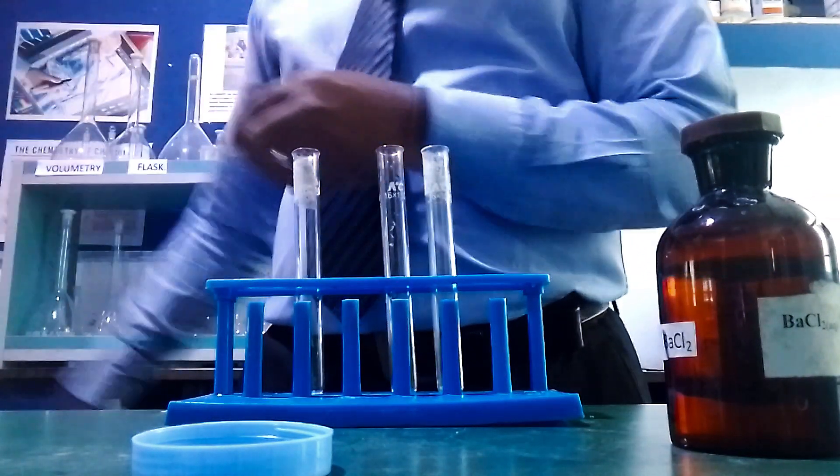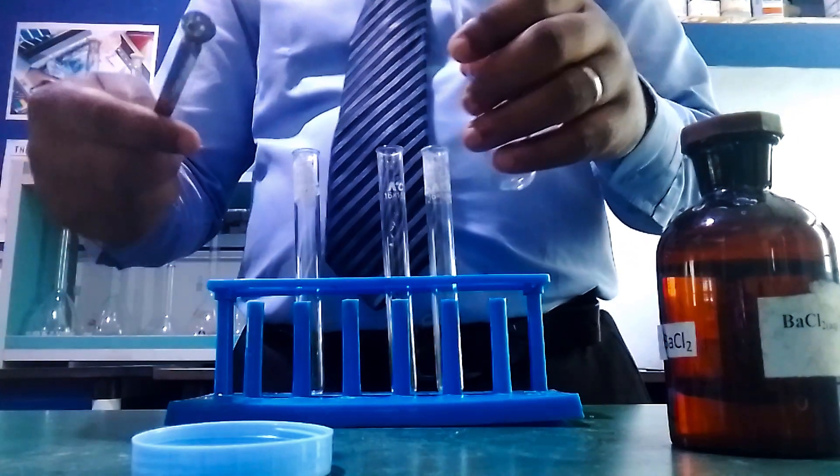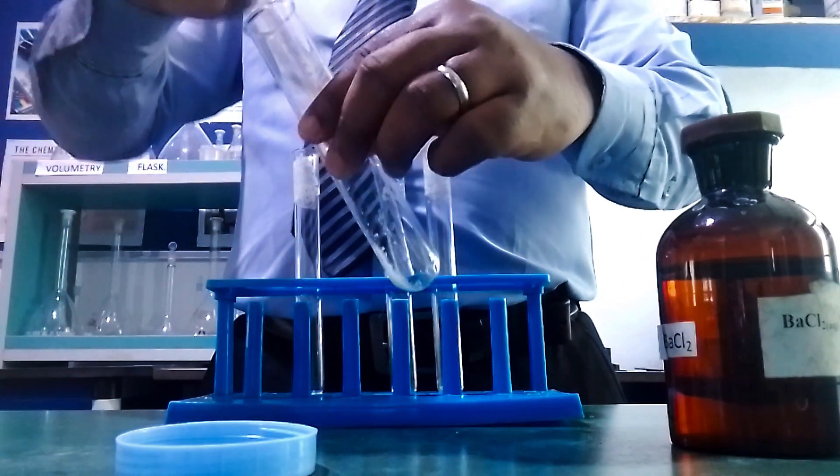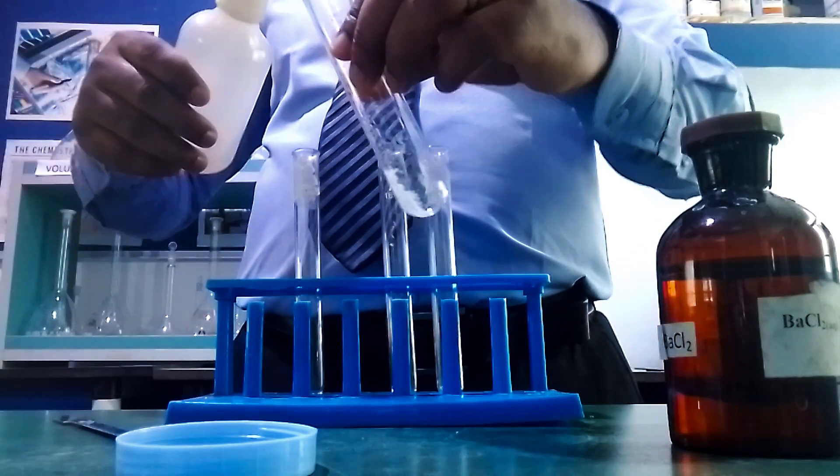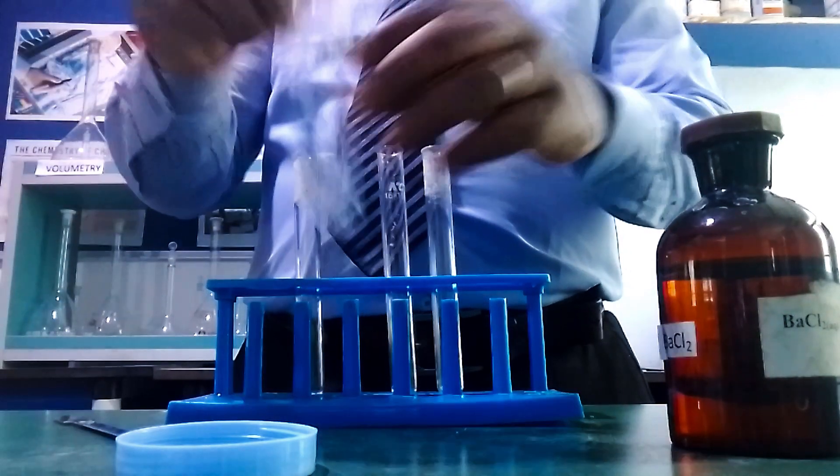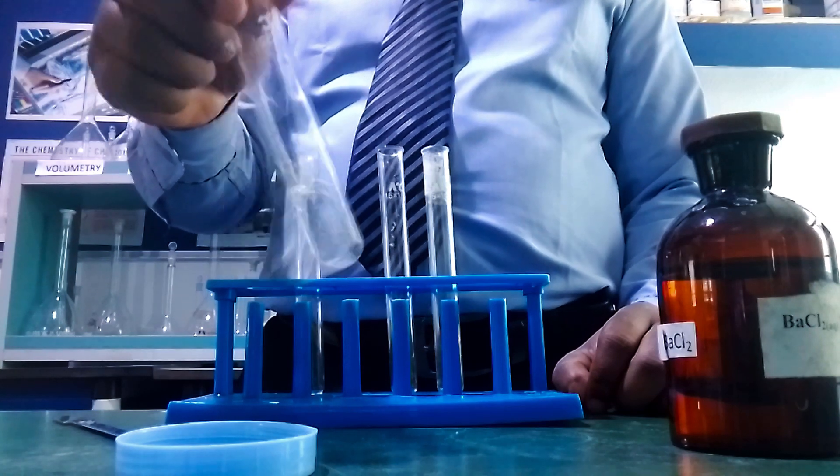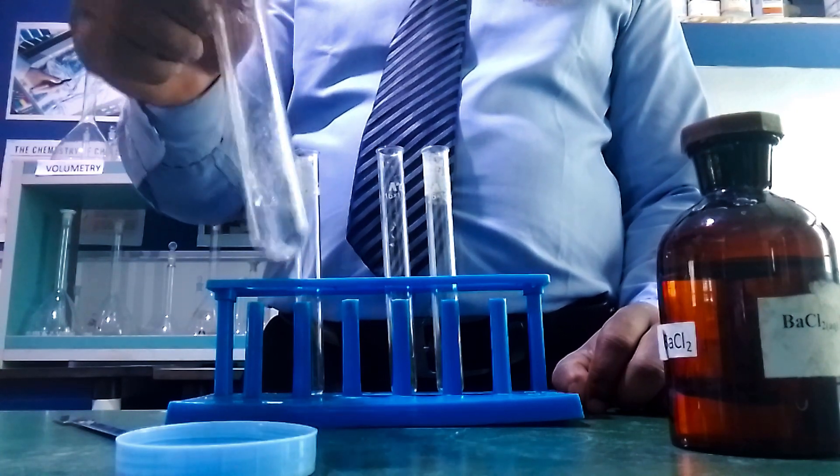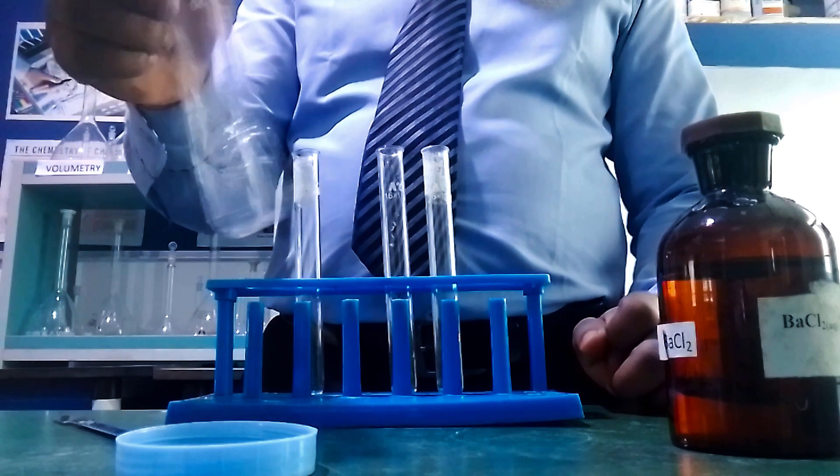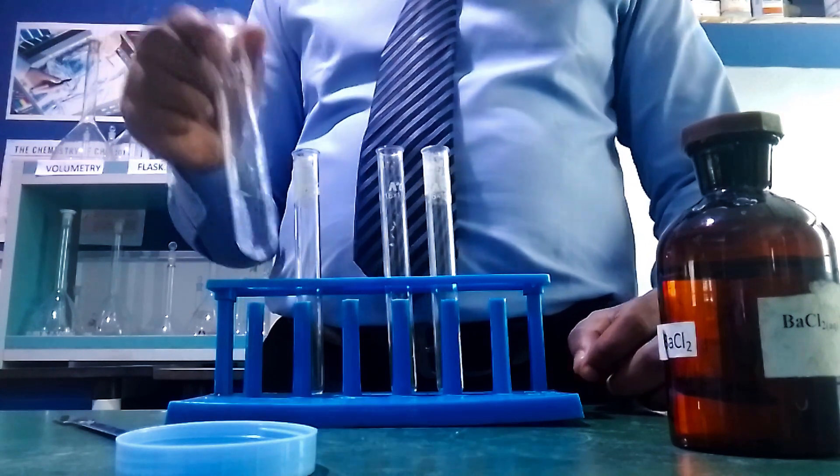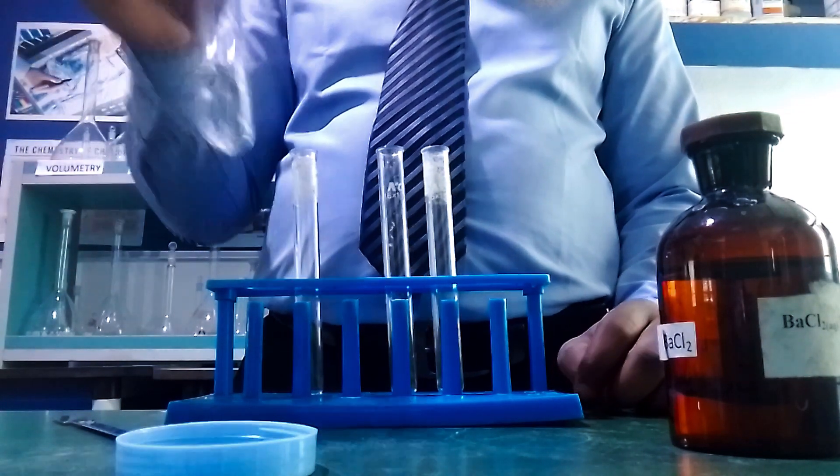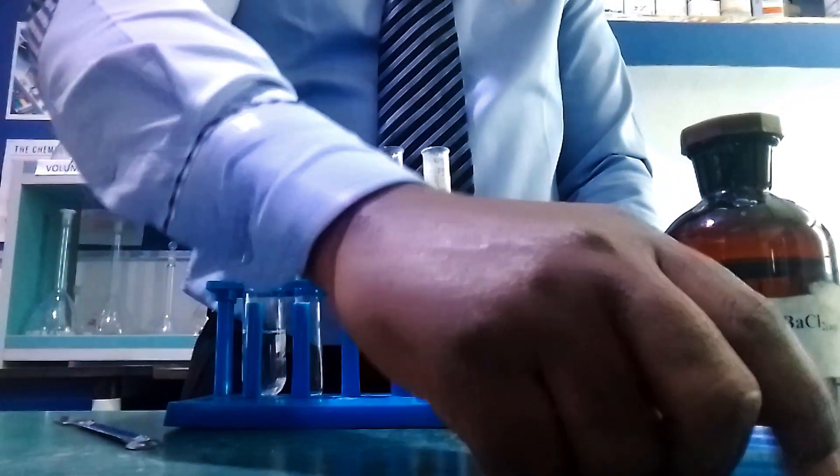I'm going to use a boiling tube to prepare a solution. Take a little quantity and add water to it. This salt is soluble, so we expect everything will dissolve. If it's a salt of a Group 1 element, almost all Group 1 salts are soluble. If yours doesn't dissolve, shake thoroughly or add more water. As you can see, this has dissolved completely, giving a colorless solution.